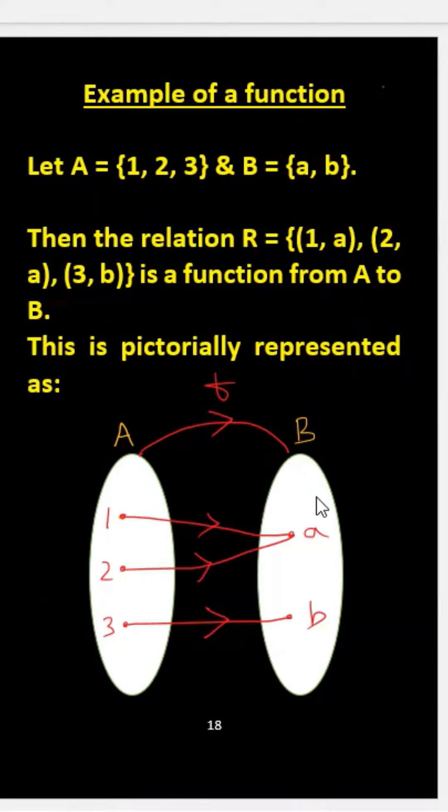A elements are written here: 1, 2, 3, and B elements are written here: a, b. We may notice 1 to a is there, 2 to a is there, 3 to b is there in the relation being given.